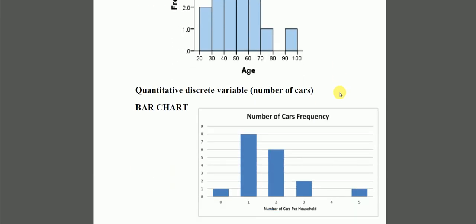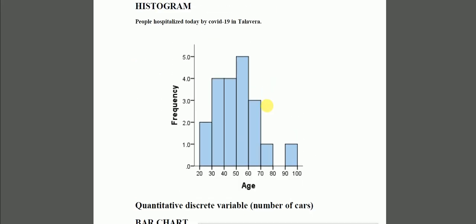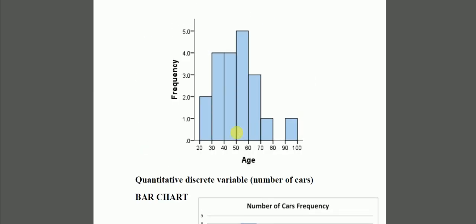The next one is the bar chart. A bar chart — like this — is used for quantitative discrete variables, not continuous. It's similar to the histogram, but we cannot mix up the histogram and the bar chart. The main difference is that in the histogram, the bars are next to each other because it is a continuous variable — it doesn't stop from 20 to 100.